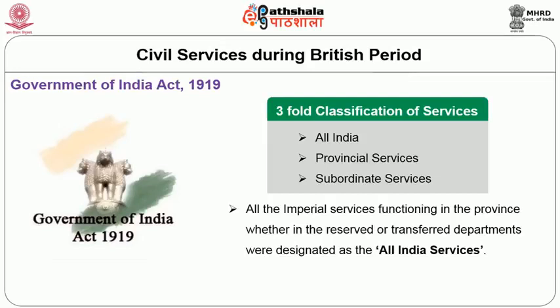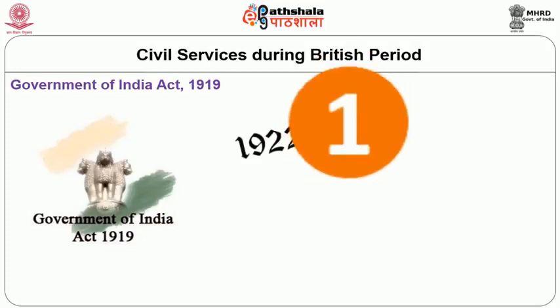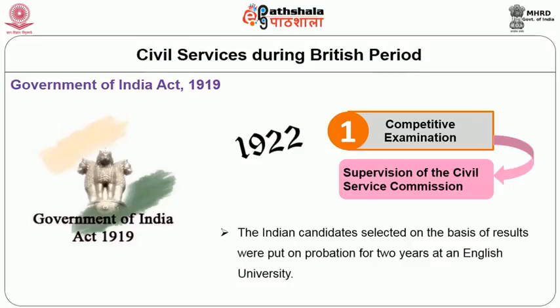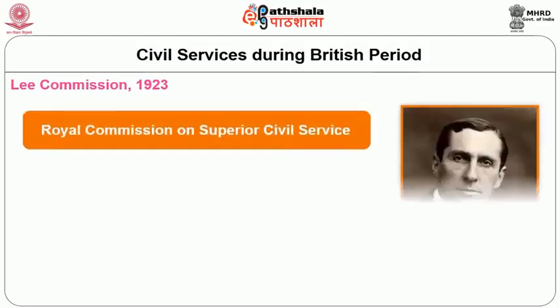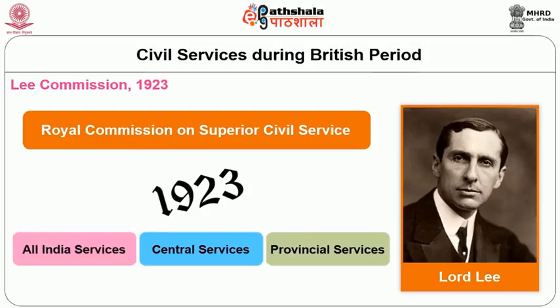Certain rights were guaranteed to members of All India Services in regard to dismissal, salaries, pensions and other rights. In 1922, the first competitive examination was held under the supervision of the Civil Service Commission. Indian candidates selected on the basis of results were put on probation for two years at an English university. The Royal Commission on Superior Civil Services was appointed under the chairmanship of Lord Lee in 1923. The Lee Commission divided the services into three main classes: All India Services, Central Civil Services, and Provincial Services.